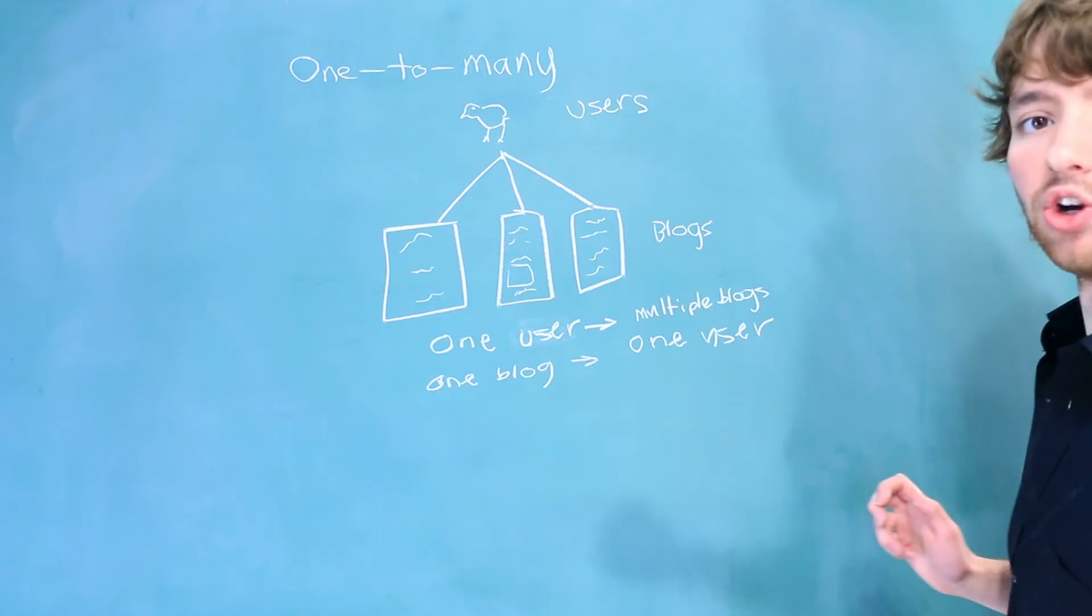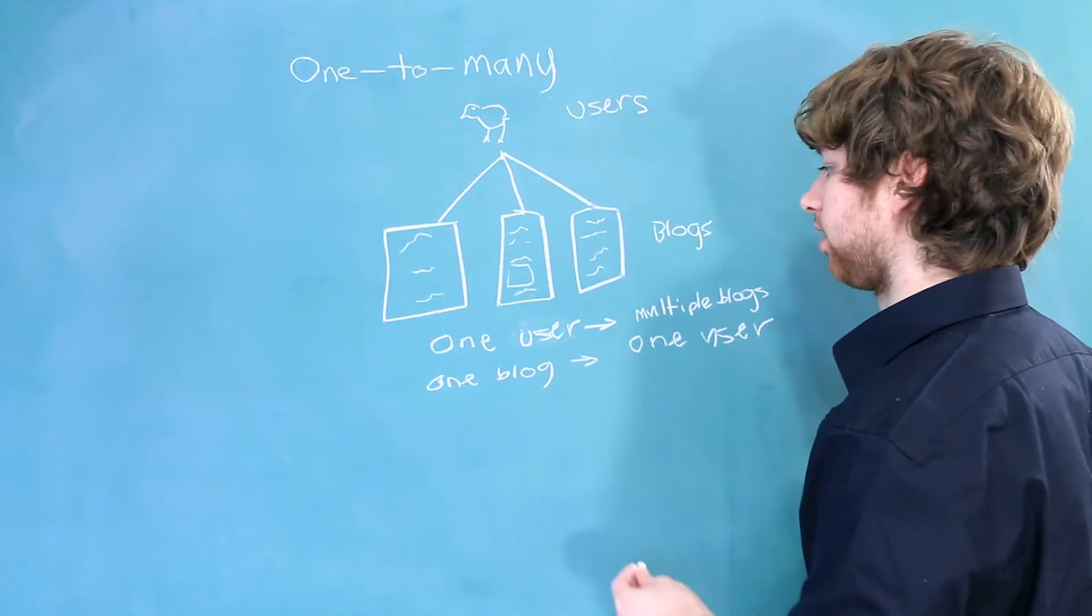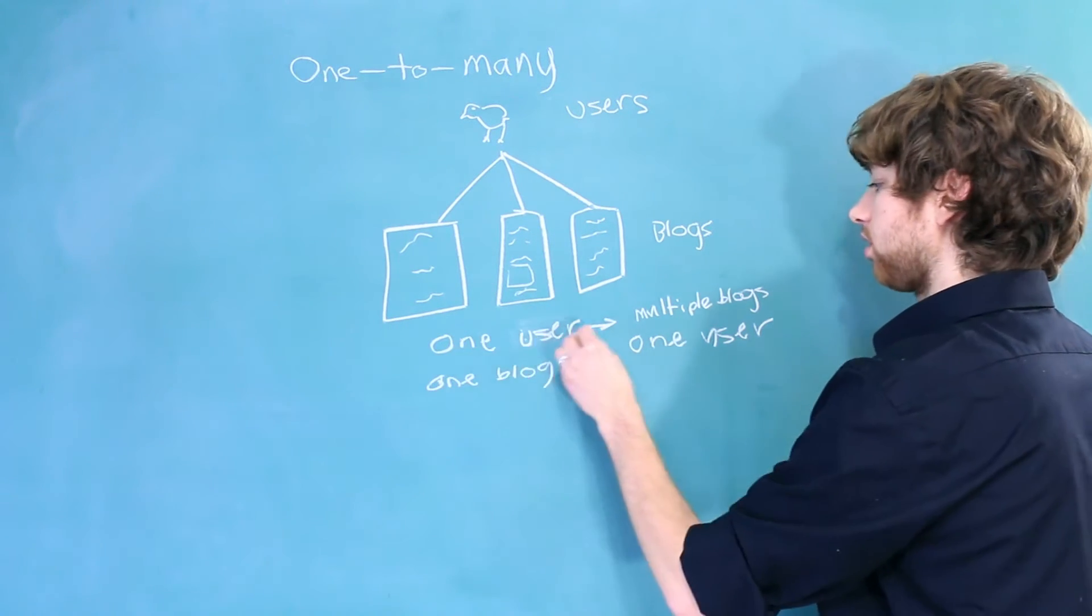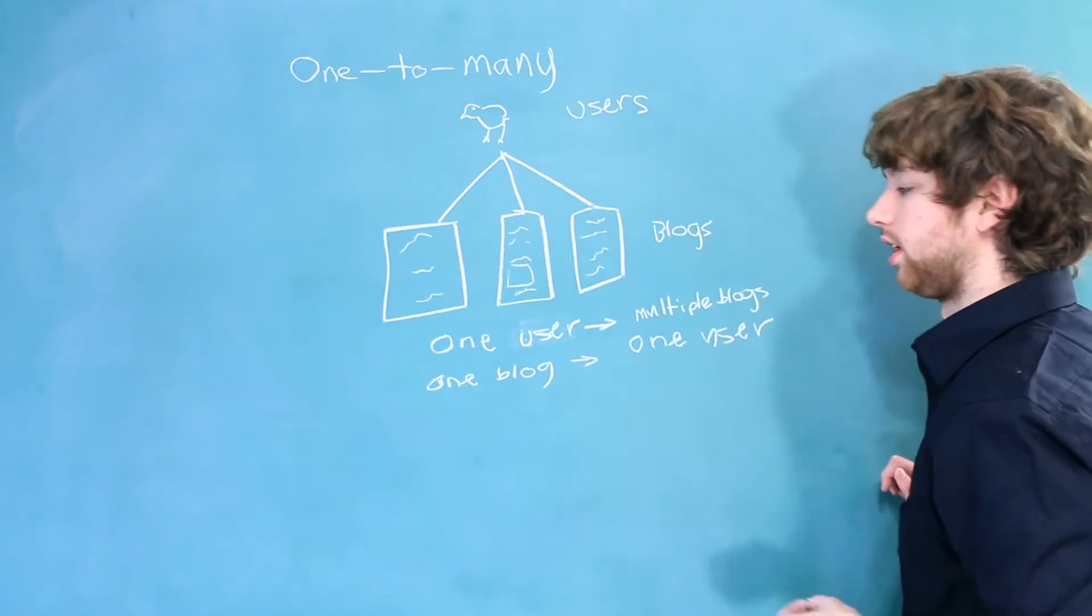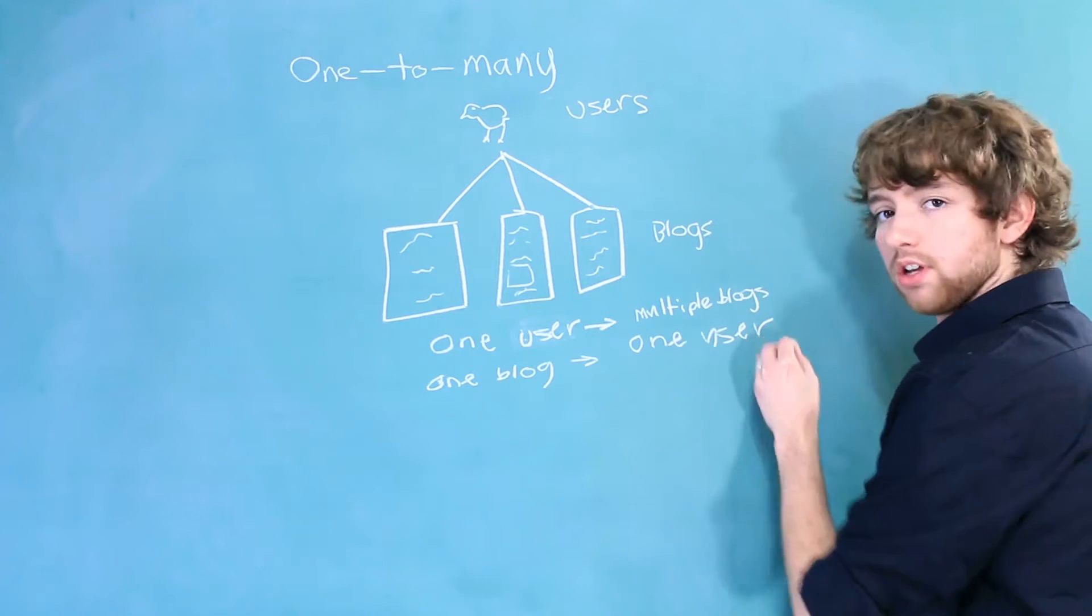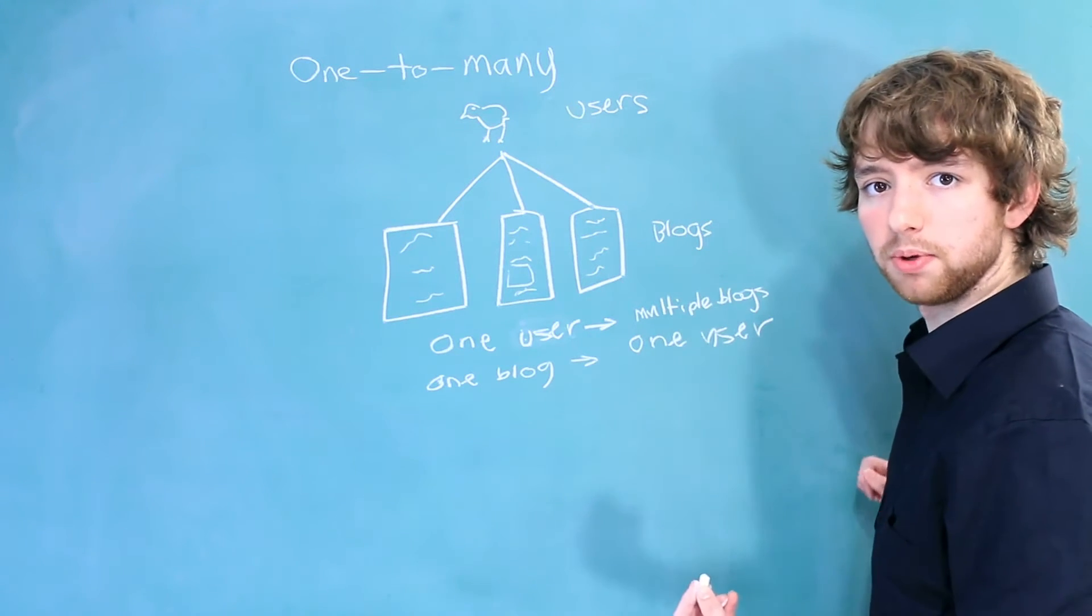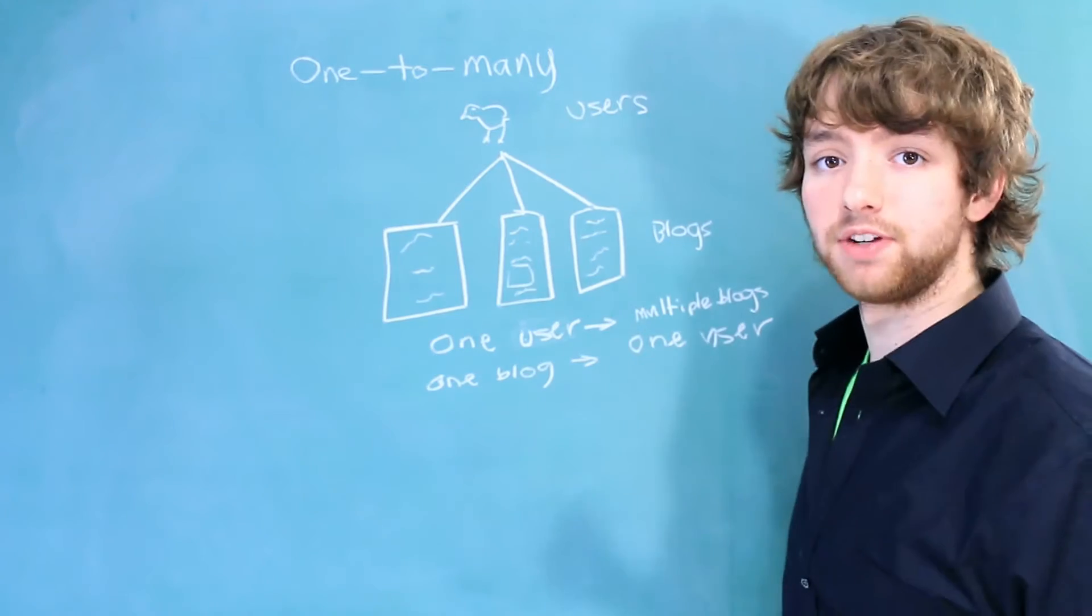This is the easiest way to figure out what kind of relationship we have. We have one user can have multiple blogs, but one blog can only have one user. If this said multiple users, then it would be a many-to-many relationship. That's what we're going to talk about in the next video.